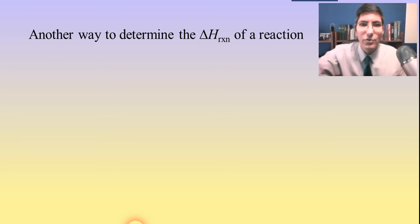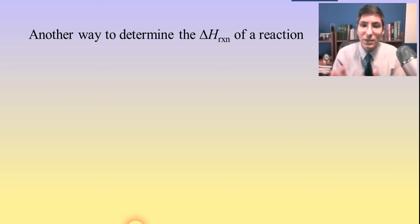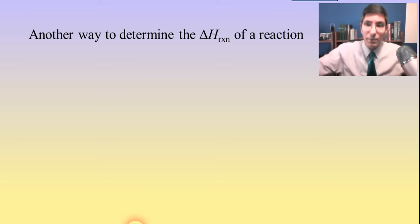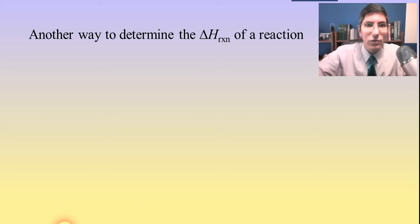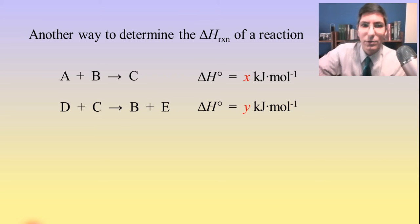Welcome back to another chemistry video. I'm Jeremy Krug and we're continuing our discussion of thermodynamics and particularly thermochemistry and how we can calculate the delta H of a reaction. If you're following my complete AP chemistry series, we've already learned two ways to calculate delta H — with bond enthalpies in lesson 14, and from the enthalpies of formation. Today we're learning another way: by taking the individual delta H values of different reactions and adding them up.